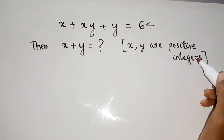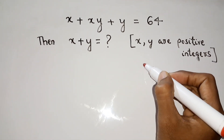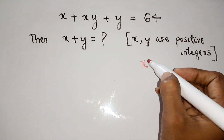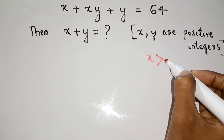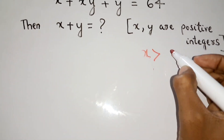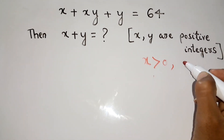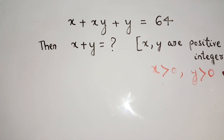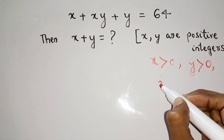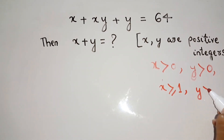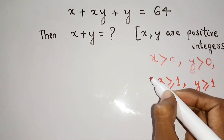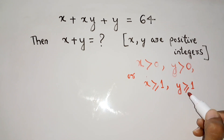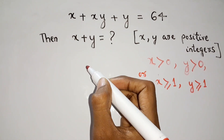Since x and y are positive integers — what is the definition of positive integer? That means x will be greater than zero and y will be greater than zero. Or we can say x greater than or equal to one and y greater than or equal to one. Either way, x greater than zero, y greater than zero, or x ≥ 1 and y ≥ 1. So how can we solve this?